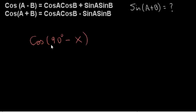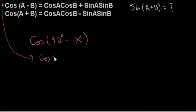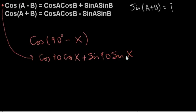First, we need to consider how to simplify the cosine of 90 degrees minus X, where X is any angle. We could use the identity by simply plugging 90 in for A and X in for B. So we get cos(90) times cos(X), plus the sine of A — which is 90 in this case — times the sine of X. So we've just replaced A with 90 and B with X in the first identity.